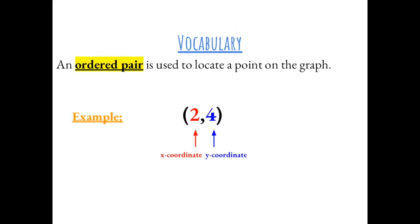An ordered pair is used to locate a point on the graph. This is an example of an ordered pair: (2, 4). The 2 represents the x-coordinate and the 4 represents the y-coordinate.